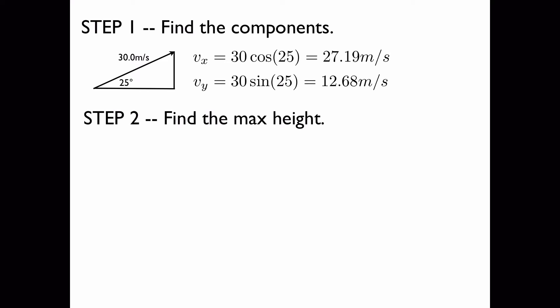Now to find the maximum height, we'll use the following equation: v_f squared equals v_i squared plus 2a times delta x. The initial velocity is 12.68 meters per second in the vertical direction. The final velocity is 0 meters per second at the top of its path and the acceleration is negative 9.8 meters per second squared.